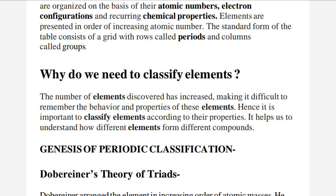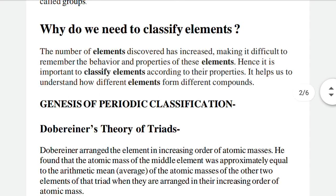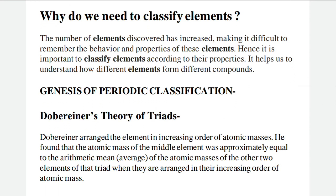A table was made with groups and periods in which elements with similar properties were placed together in separate groups, so that when their properties are studied, elements with similar behavior and properties can be easily identified. After this, we look at the genesis of periodic classification — how it started.